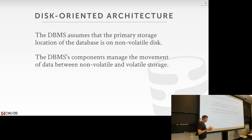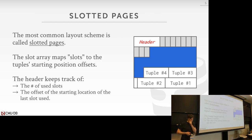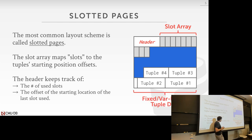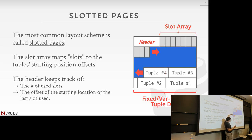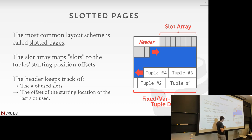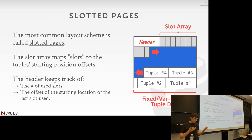How do we bring data in when we can't fit it all in DRAM? We finished up talking about slotted pages — how we organize tuples inside a page so that we can move things around and pack in as many tuples as possible. We have the slot array at the top, fixed and variable length tuple data at the bottom, and we keep adding things from both ends until we reach the middle and have no more space. This is the primary way most row-store database systems work, but it's not the only way.